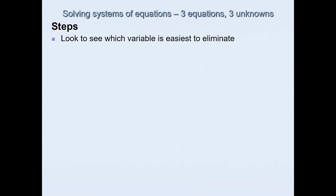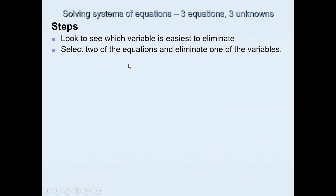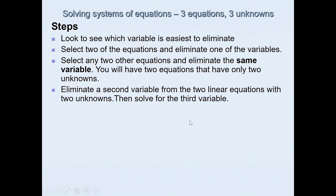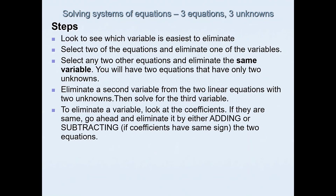Now we'll look at the steps involved in solving a system of equations. First, decide which variable is easiest to eliminate. Once chosen, select two of the equations and eliminate that variable, then select two other equations and eliminate the same variable. You will now have two equations with only two unknowns. Using those two equations, eliminate the second variable and then solve for the third.